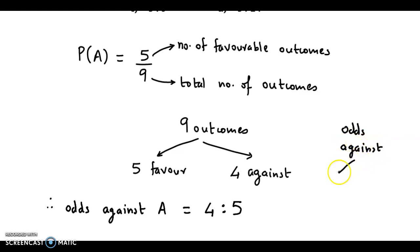Because in case of odds against ratio, we always mention the outcomes which are against is to the outcomes which are in favor. So the odds against ratio is 4 is to 5.